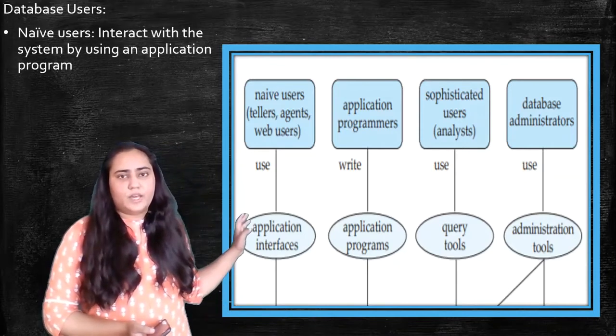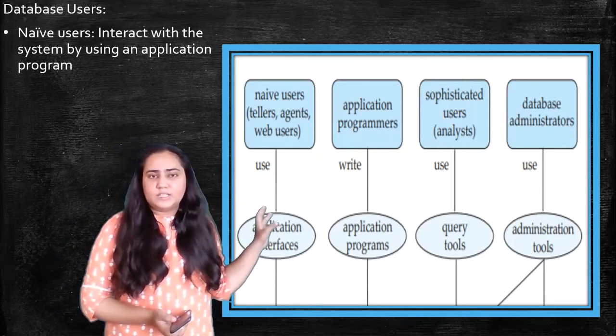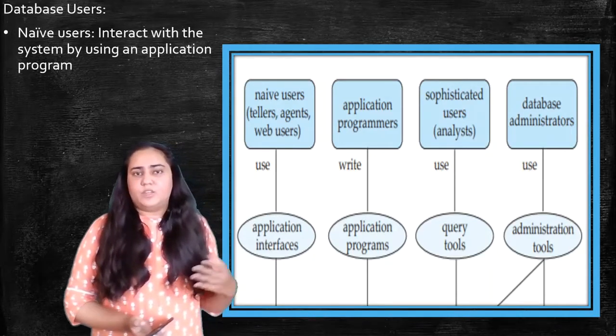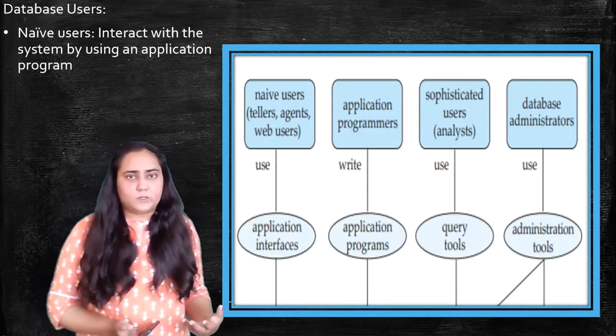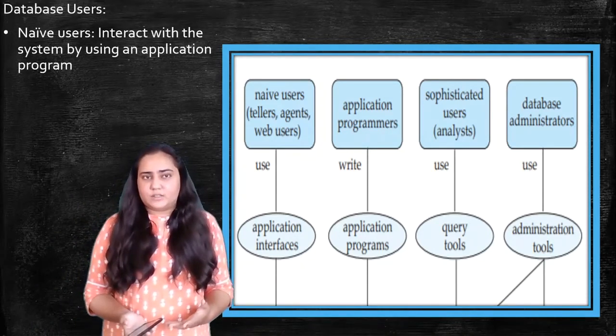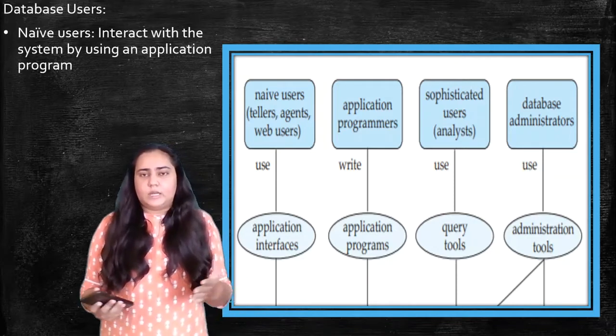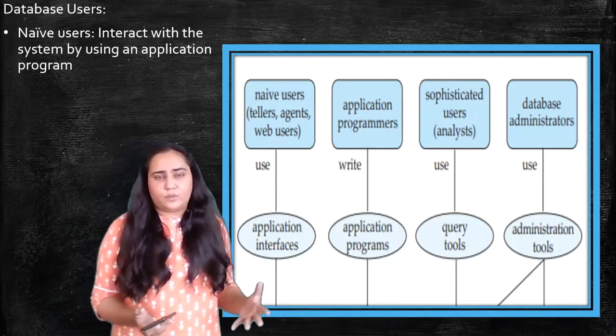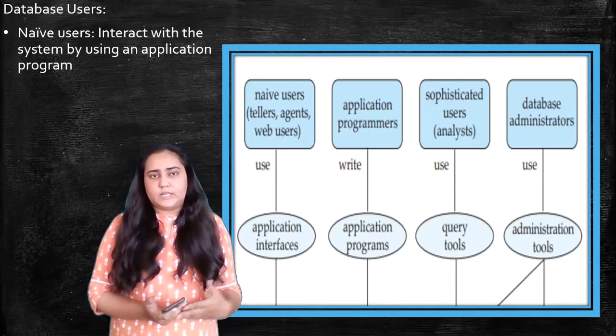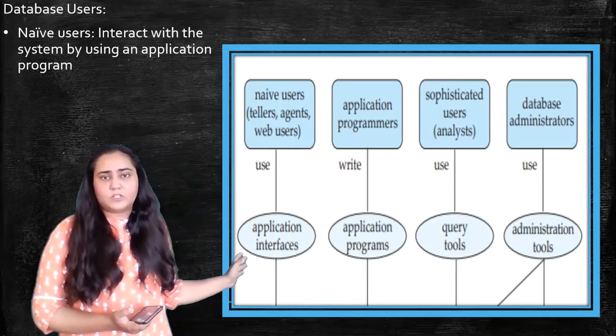So the first type of users we have are called naive users. So these are all agents and web users and tellers. These are people who do not know anything about databases at all. These are people like you and me when we are accessing a web application, when we are accessing our results online, or when we are booking flights online, booking movie tickets online. When we are doing all these things, we are naive users because we do not know how exactly the database is stored. We do not know how the person who's running the movie booking application is storing things in the database.